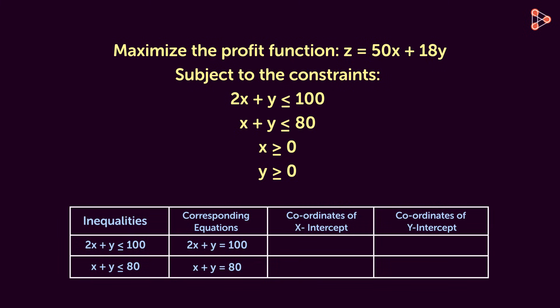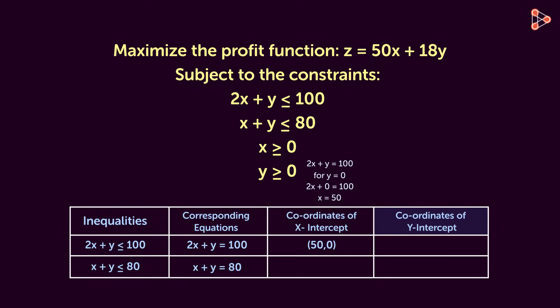Let me help you with the x and y intercepts of the first equation. For the x-intercept, we substitute y equal to zero. We get the value of x as 50, so the coordinates of the x-intercept are (50, 0). And to find the coordinates of the y-intercept, we substitute x as zero. That gives us the value of y as 100. The coordinates of the y-intercept are (0, 100). Similarly, we get the x and y intercepts of the second equation.